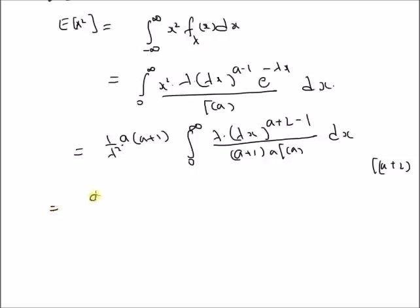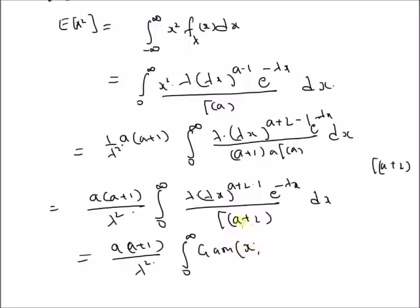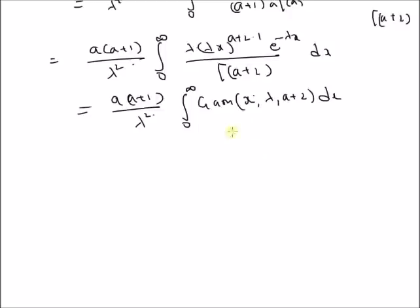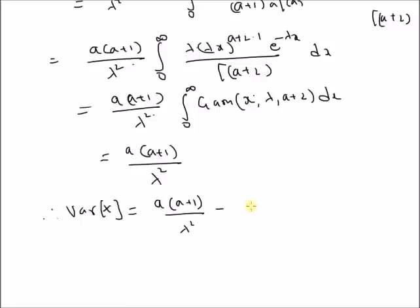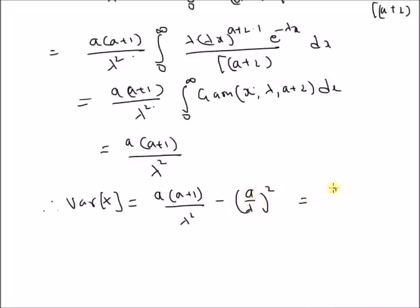Rewriting the second moment, we have a(a+1)/λ² times the integral from 0 to ∞ of the gamma PDF with parameters λ and a+2 dx. Since that integral equals 1, we get E[X²] = a(a+1)/λ². Therefore the variance of a gamma random variable is a(a+1)/λ² − (a/λ)² = a/λ².